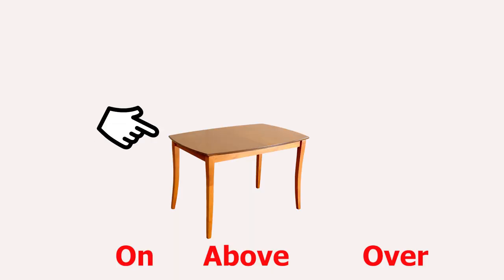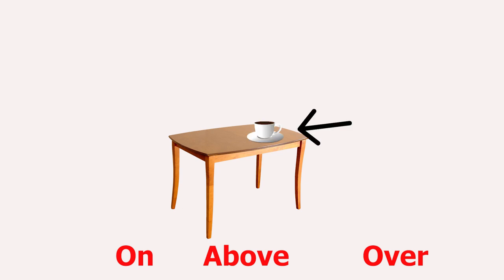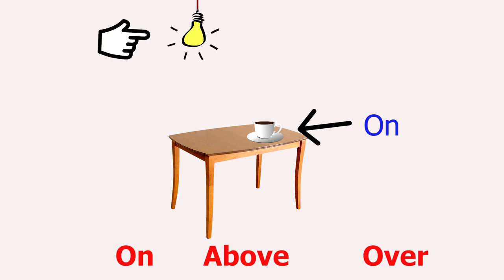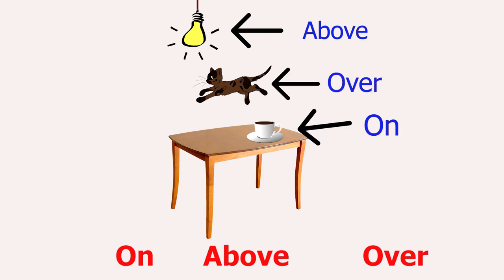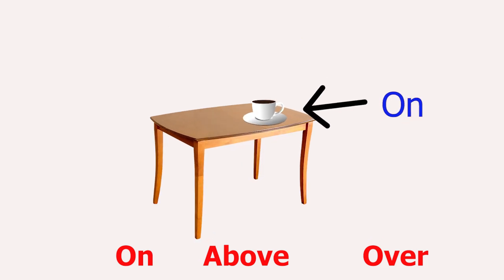Well, look at here. There is a table and there is a calf. So this calf is on the table, touching the table. And there is a light wolf above the table, not touching. And there is a cat, and this cat is jumping over the table.